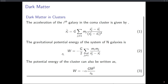The potential energy of the cluster can also be written as W equals minus alpha G M² divided by r_h, where capital M is the total mass of all galaxies in the cluster, and r_h is the half-mass radius — the distance from the center at which exactly half the cluster's mass is enclosed. Alpha is a numerical factor of order unity, and for the Coma cluster its value is approximately 0.4.